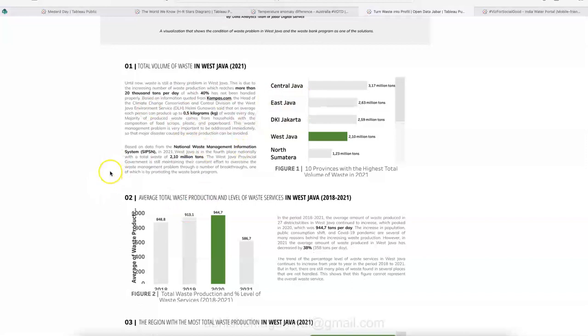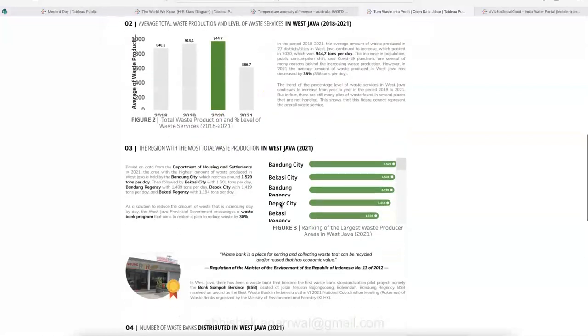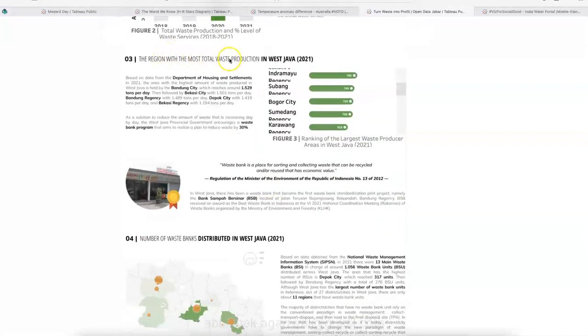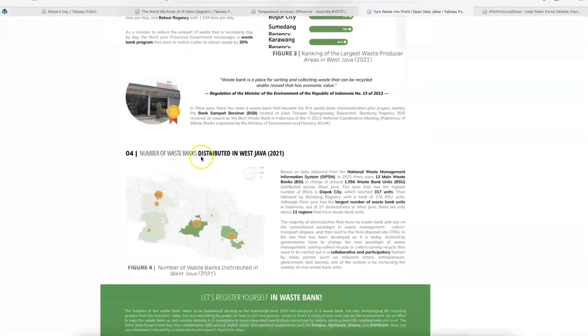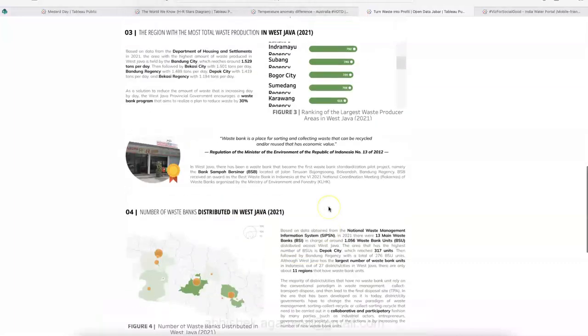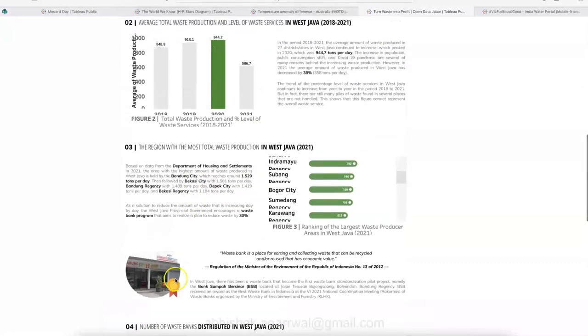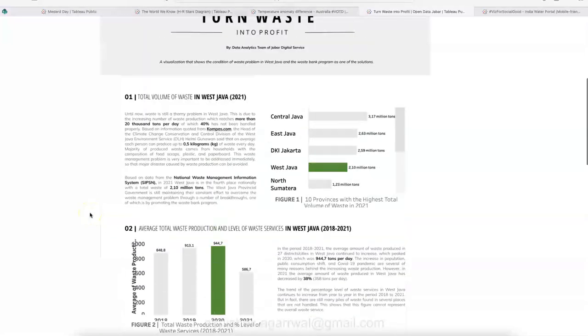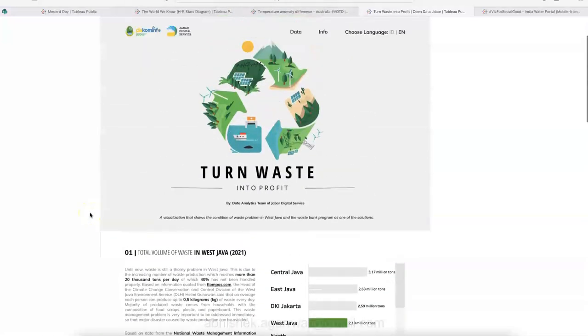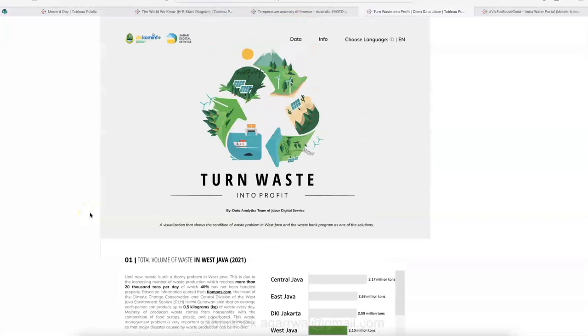And this visualization, as you can see, is created in bit of journalism sort of a format where a lot of context have been given with the help of the text for this visualization. And the different points was evaluated like total volume of waste, average total waste production and waste services, the region with the most waste production. And down below the number of waste banks distributed in West Java.